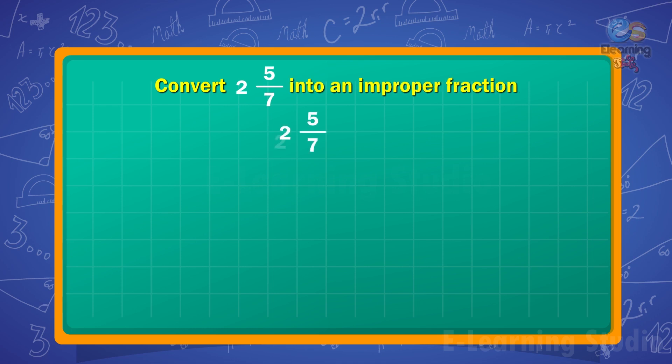first we multiply 2, which is the whole number, and 7, which is the denominator. 2 into 7 equals 14, and 14 plus 5 equals 19.